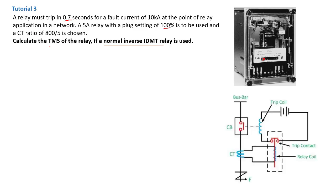In this tutorial we need to calculate for the normal inverse characteristics. If you've watched my tutorial on IDMT relay characteristics curves, I described in some depth what these characteristics mean and the formulas involved. Moving forward, we need to find the TMS — the Time Multiplier Settings — which relates to the disc and the setting current together, determining how that relay is going to rotate.